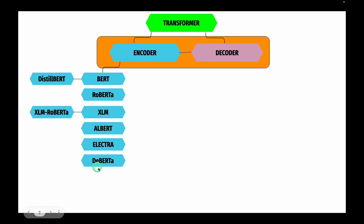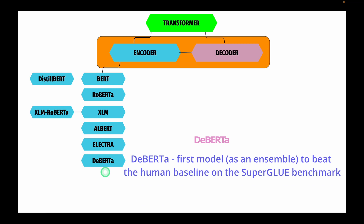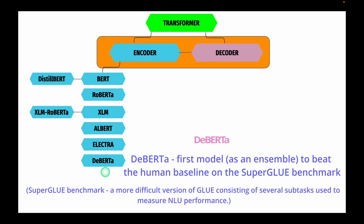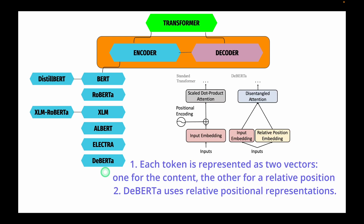The final encoder architecture is DeBERTa, which is the first model to beat the human baseline on the SuperGLUE benchmark — a more difficult version of GLUE consisting of several subtasks used to measure NLU performance. DeBERTa makes two major architectural changes: first, each token is represented as two vectors — one for content and one for relative position — which helps the self-attention layers better model the dependency of nearby token pairs. Second, DeBERTa uses relative position representations, achieved by modifying the internal attention mechanism with a few additional parameters.